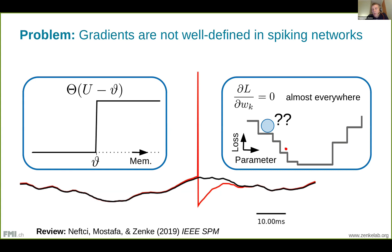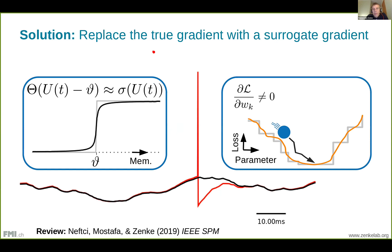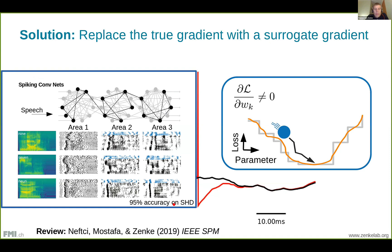An easy fix is to replace the true gradient with a surrogate, which allows optimization and brings you close to the same optimum in parameter space. This is simple to do — I invite you to read the review by Neftci, Hasham, and myself. This allows training complicated network topologies, for instance a spiking ConvNet that takes a language input, transforms it through multiple layers with excitatory and inhibitory neurons, and achieves good accuracy — a major step forward.